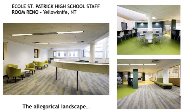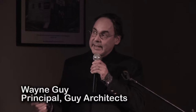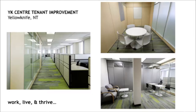Because the landscape is such a strong element — the allegorical landscape — we did a project for Yellow Knife Catholic Schools and actually detailed it like a landscape: the hedge, the congregation area for staff, using seats that looked like hedges. Creating identity and wellbeing — this is a project we did for the Guild of Arts and Craft. We used iconic windows to express the creativity that happens in that wonderful building. And siding — you never have to touch it for 50 years. We love using metal. Work, live and thrive — we spend 40 to 60 hours a week at work, and we think work environments should be exemplary.